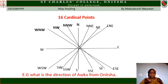The 16 cardinal points are: North, North-Northeast, Northeast, East-Northeast, East, East-Southeast, Southeast, South-Southeast, South, South-Southwest, Southwest, West-Southwest, West, West-Northwest, Northwest, and North-Northwest. These are the 16 cardinal points.